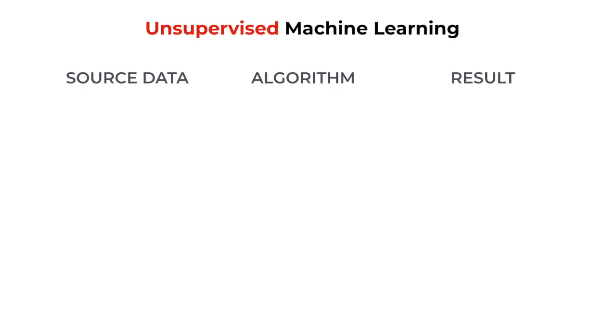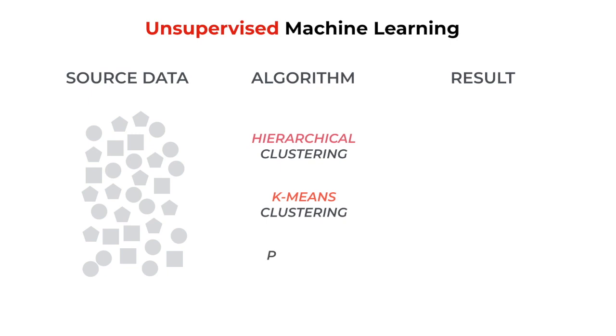With unsupervised machine learning methods, we start with a data set, typically a table of elements, such as these shapes. We can use a clustering method, for example hierarchical clustering, which is a method that seeks to identify groups based on their similarities. Or we can use a dimensionality reduction method, such as principal component analysis, that will assign samples to groups of elements that are present.